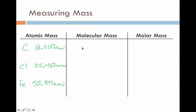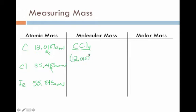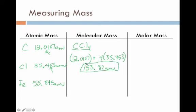Now let's move on to calculating molecular masses. We can put elements together into compounds — for example, CCl4, carbon tetrachloride. It has one carbon atom and four chlorines. We take the mass of carbon plus four times the mass of chlorine: 12.0107 plus four times 35.453, which gives us approximately 153.82 atomic mass units. That would be the molecular mass of CCl4.